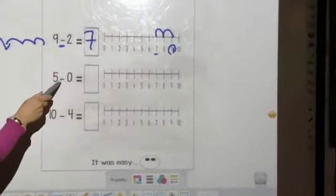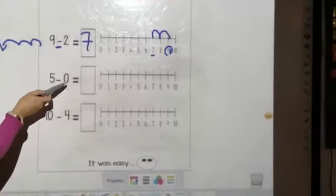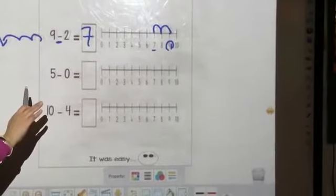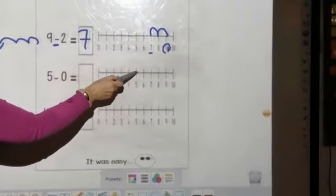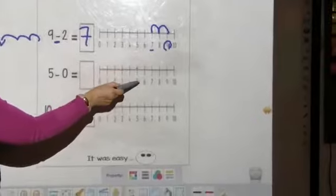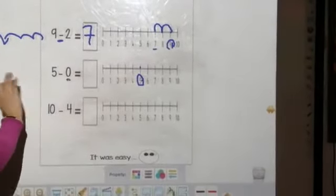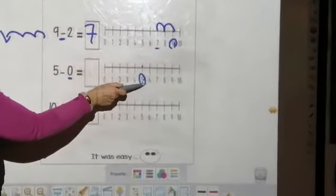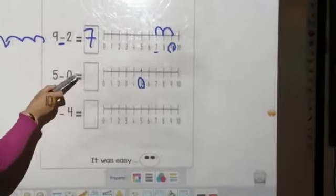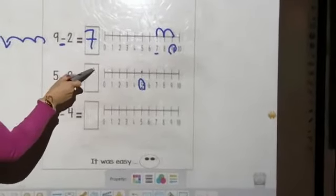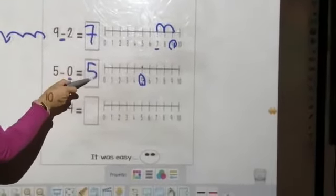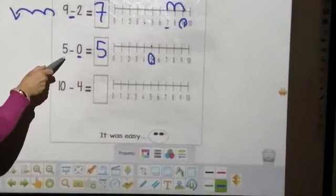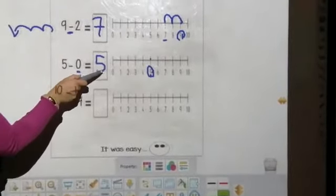5 minus 0. Of course, I have to remind you that 0 is nothing. So, we didn't take anything from number 5. We have to stand for number 5. And we have to stand because 0 is nothing. So, we have to stand at the same point, which is 5. 5 minus 0 is 5. Why? Because 0 is nothing. We didn't take anything from 5.